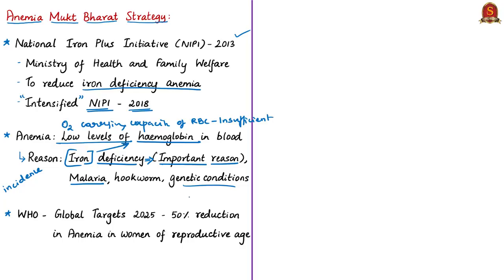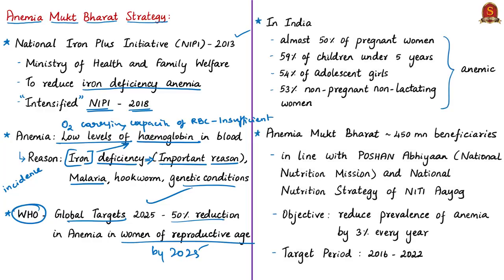Anemia is a serious concern for children as it can hamper cognitive development, lead to stunted growth, and increase infection levels. The WHO's global target is a 50% reduction of anemia in women of reproductive age by 2025. In India, more than 50% of four vulnerable sections — pregnant women, children under 5 years, adolescent girls, and non-pregnant non-lactating women — are anemic.